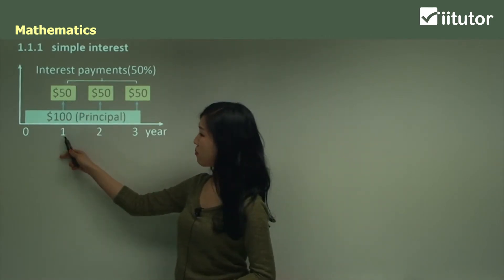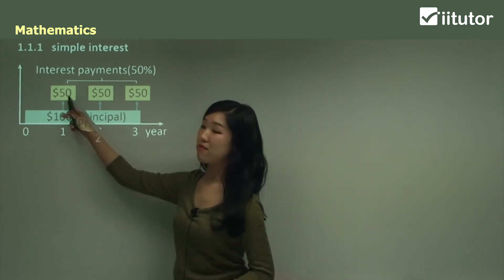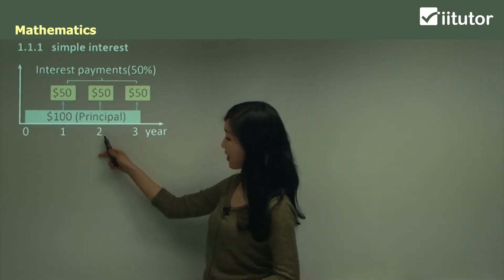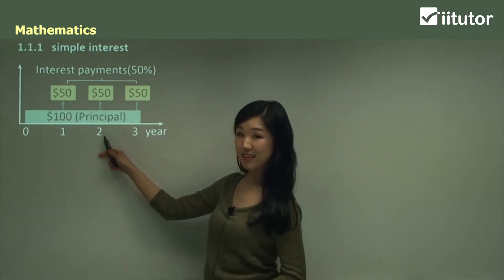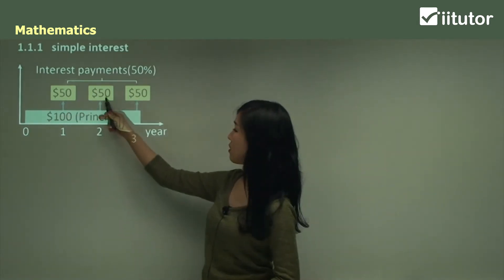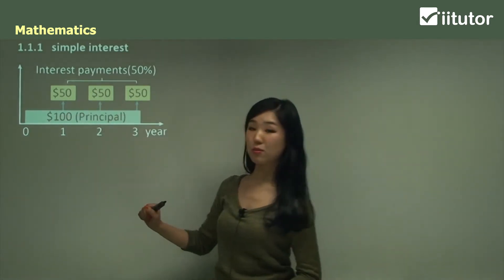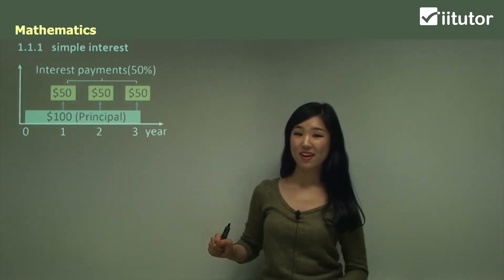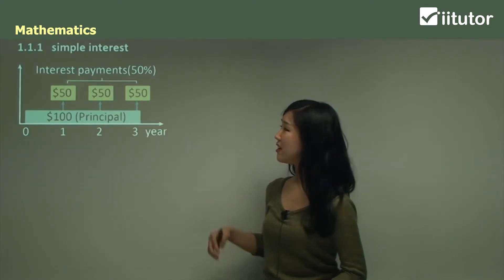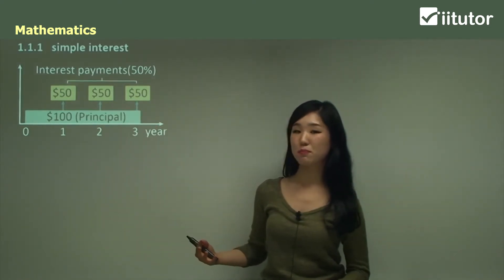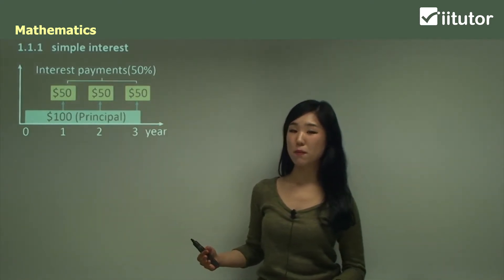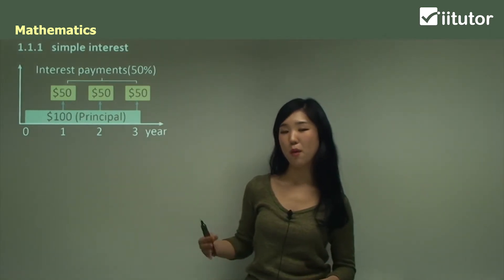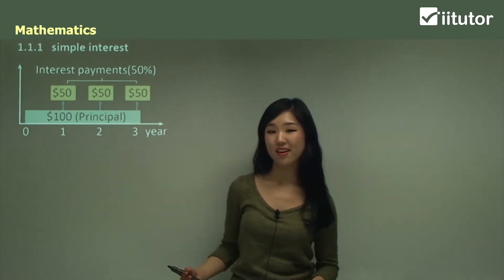So in the first period we pay $50 of interest, in the second year we pay $50 as well, and the same applies for the third year. Simple interest basically means we're paying a fixed amount of interest per period.